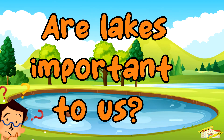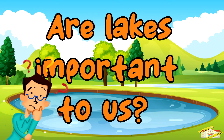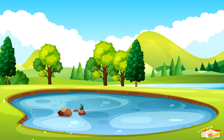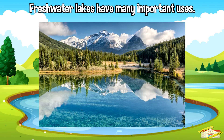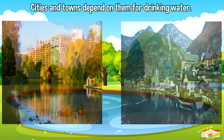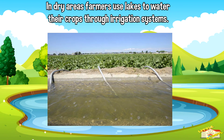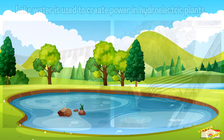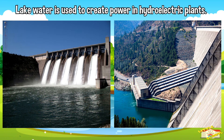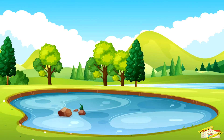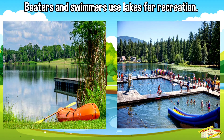Are lakes important to us? Freshwater lakes have many important uses. Cities and towns depend on them for drinking water. In dry areas, farmers use lakes to water their crops through irrigation systems. Lake water is used to create power in hydroelectric plants. Boaters and swimmers use lakes for recreation.